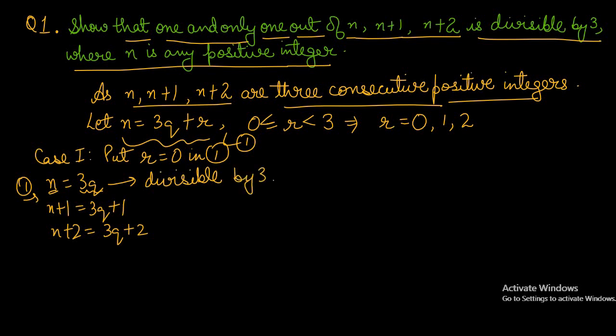But if we look at n plus 1 — when we divide it by 3, then the quotient is q and remainder is 1. When we divide n plus 2 by 3, then the quotient is q but the remainder is 2. That means these two are not divisible by 3. So only 1 number is divisible, that is n.